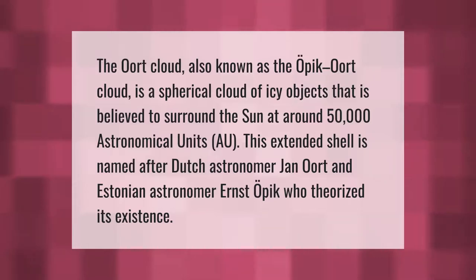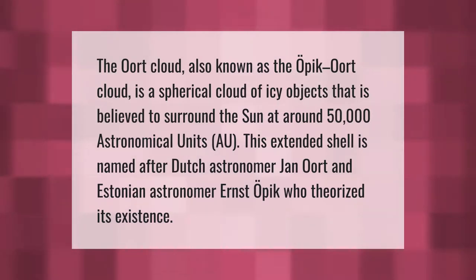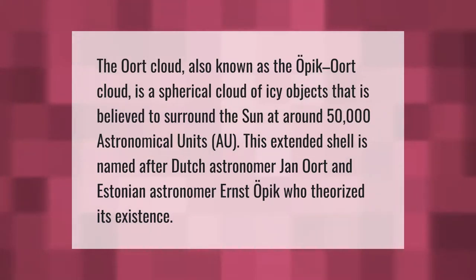The Oort Cloud is a spherical cloud of icy objects believed to surround the sun at around 50,000 astronomical units. This extended shell is named after Dutch astronomer Jan Oort and Estonian astronomer Ernst Öpik, who theorized its existence.